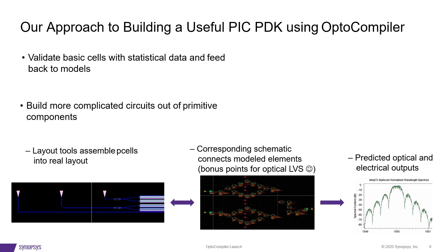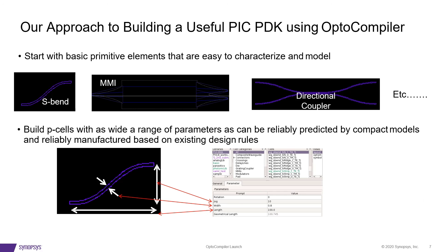You can build much more complicated photonic integrated circuits out of those primitive components. You have layout tools to assemble the P-cells into a real layout, and a schematic view connected to one another in the OptoCompiler cockpit. Optical LVS is a really nice feature to have — I've personally screwed up designs by not having optical LVS available. One of the most common areas where you can mess up is not having things optically connected properly. And finally, you have compact models to predict what's going to happen when you assemble the schematic.